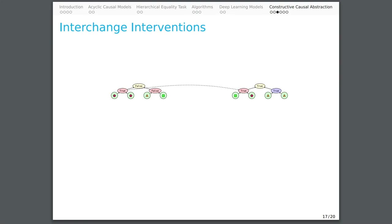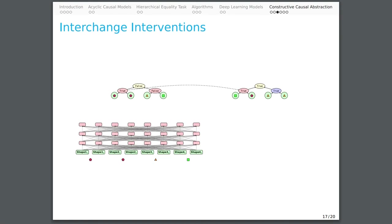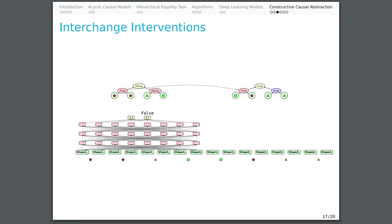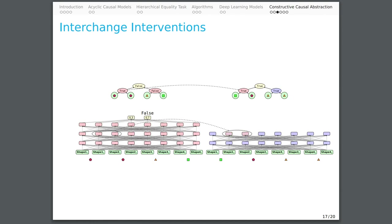If our tree-structured algorithm is an abstraction of our deep learning model under the alignment shown, then the corresponding interchange intervention on the neural network should have the same result. Again, the source input is circle-circle-triangle-triangle. The model first retrieves random vector representations for each object, and then computes each layer of neural activations until the output is reached, correctly predicting false. For the base input, the model retrieves vector representations and computes each layer of neural activations until the second layer. The neurons aligned with the first intermediate variable are set to the values they would have taken if the source input were provided to the neural network. This determines the values of the third layer and the output logits. The neural model predicts true, matching the counterfactual behavior of the tree-structured algorithm.